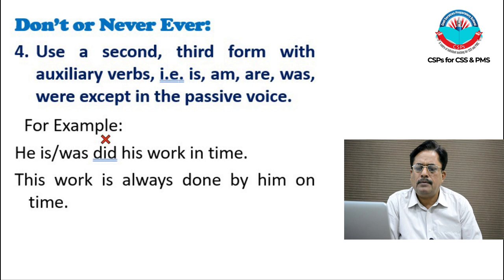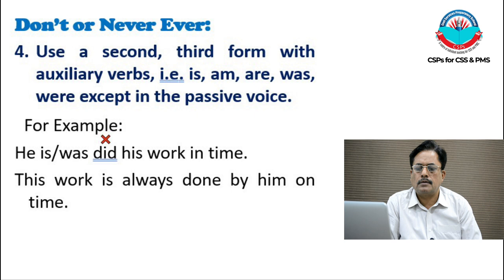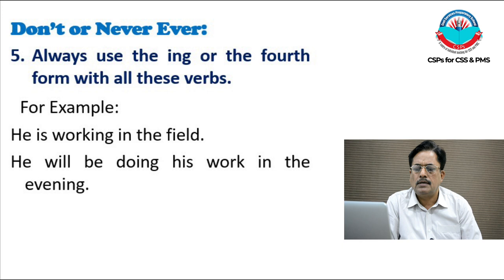Next: never ever use a second or third form with an auxiliary verb — that is, is, am, was — except in the passive voice. For example, 'he is or was did his work in time' is wrong. In passive, we can say 'this work is always done by him on time.' With auxiliary verbs is, am, was, always use the -ing form — the fourth form. For example: 'he is working in the field' and 'he will be doing his work in the evening.'